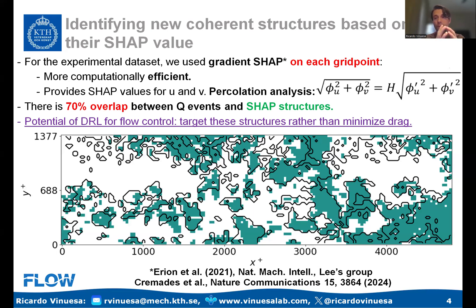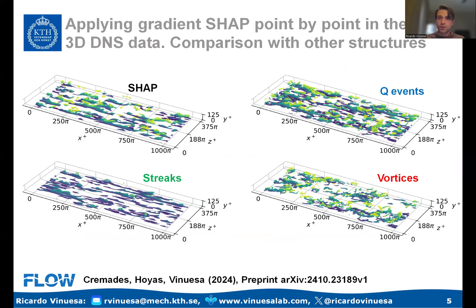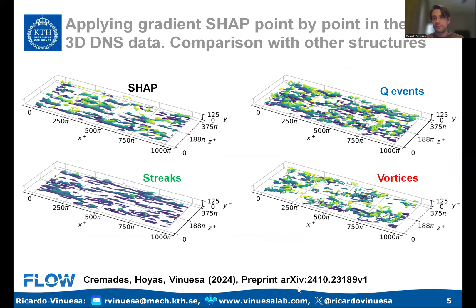We wanted to go beyond 2D to a fully 3D analysis on a DNS dataset. We took a DNS database at a low Reynolds number, Re_τ = 125, for computational convenience, using quite large boxes. This is work together with Andrés Cremades and Sergio; a preprint is available on arXiv with all the details and results.